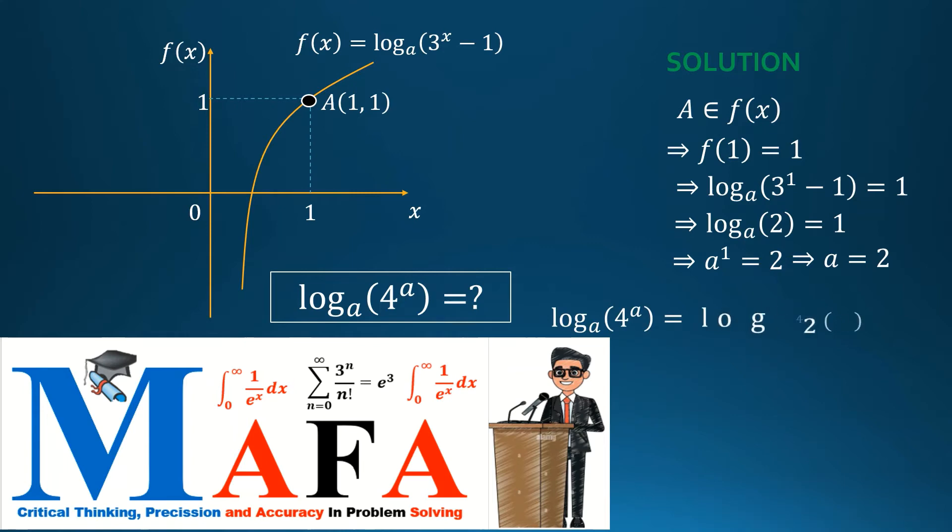Now we need logarithm to the base a of 4 to the a. We can write it as logarithm to the base 2 of 4 squared, which is 2 logarithm to the base 2 of 4, which is 2 logarithm to the base 2 of 2 squared.